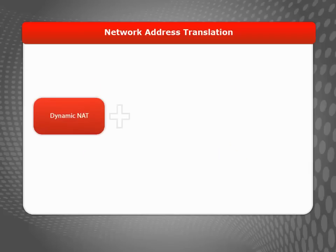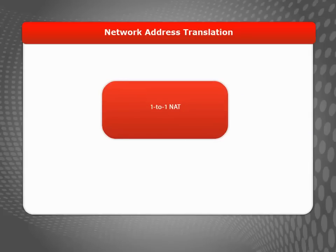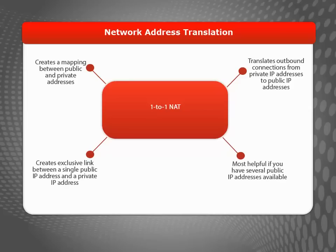The combination of dynamic NAT and static NAT is powerful and allows you to translate both inbound and outbound connections. If you want to avoid creating a separate rule for inbound and outbound connections, you can use a third type of NAT, 1-to-1 NAT, to create a mapping between public and private IP addresses. 1-to-1 NAT is not frequently used because it creates an exclusive link between a single public IP address and a private IP address, which may not be very useful unless you have several public IP addresses to spare.